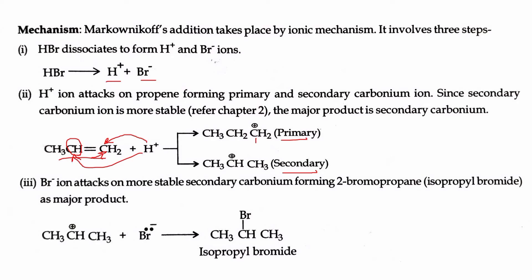The Br- ion attacks the more stable secondary carbocation, which is more stable than the primary carbocation. Therefore the major product formed is 2-bromopropane. The primary carbocation is less stable and present in low quantity. The bromine attacks the secondary carbon and forms isopropyl bromide (2-bromopropane).